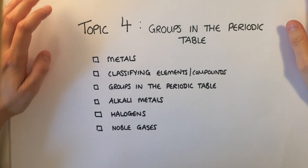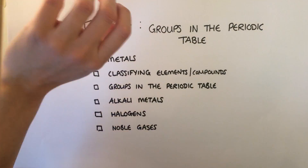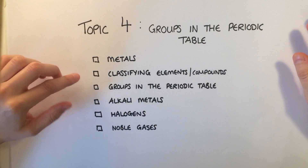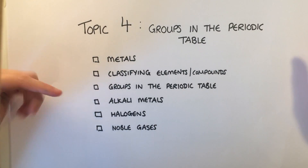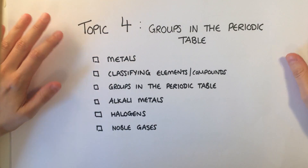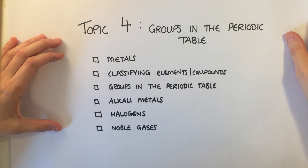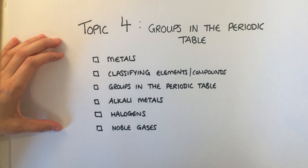Additional Science Chemistry, Topic 4: Groups in the Periodic Table. Metals, Classifying Elements and Compounds, Groups in the Periodic Table — Alkali Metals, Halogens and Noble Gases.